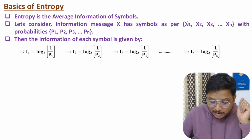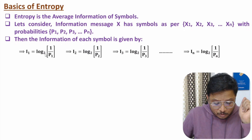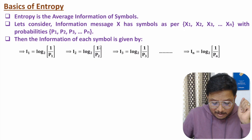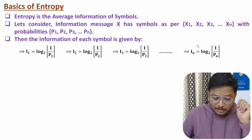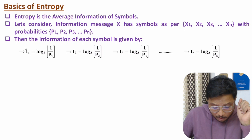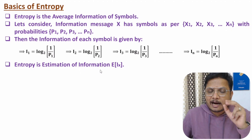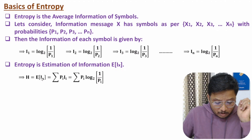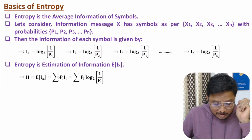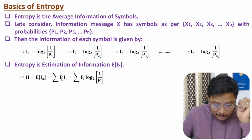For symbol X1, information is I1, that is log base 2 of 1 divided by P1. Likewise, for all the symbols, one can calculate information. To understand entropy, we need to identify the average of all these information values, and that can be calculated by the expectation of information. The expectation function is summation of P_i times I_i. So we do summation of probability times information for all the symbols, and that results in entropy.